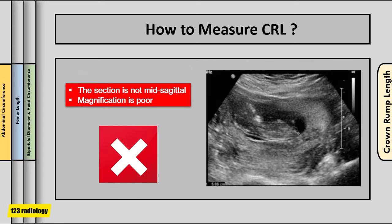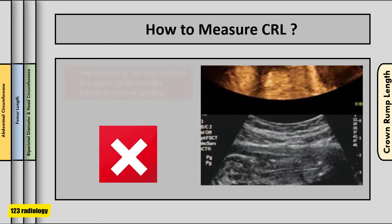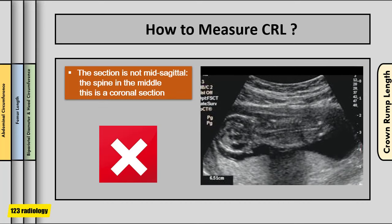Here are examples of incorrect crown rump length estimation. In the first, the section is not mid-sagittal and magnification is poor. In the second, the section is not mid-sagittal and the fetus is flexed rather than in a neutral position, leading to underestimation. In the third incorrect example, the section shows the spine in the middle — this is a coronal section; the correct crown rump length must be measured in the sagittal section, not the coronal.